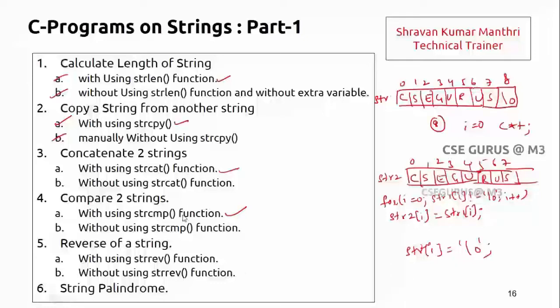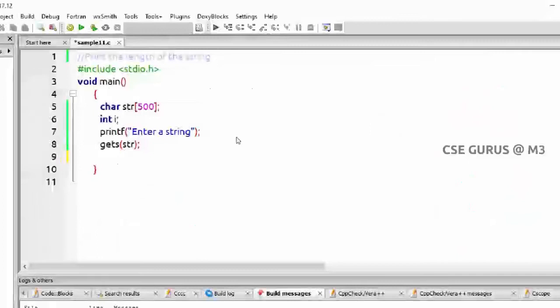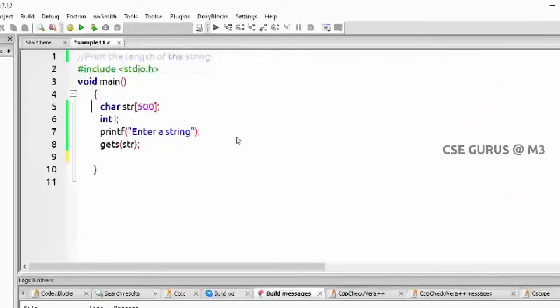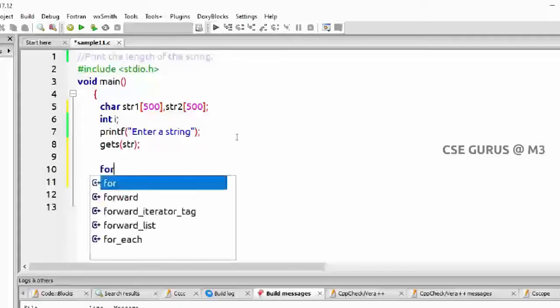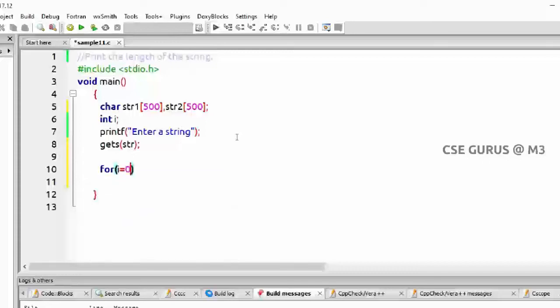We'll see the execution part. Here you can see I have taken a character data type as str. Anyway, here we require two, right? str1 and I may require str of two of 500, something like this I'll take, and i variable. Enter a string.